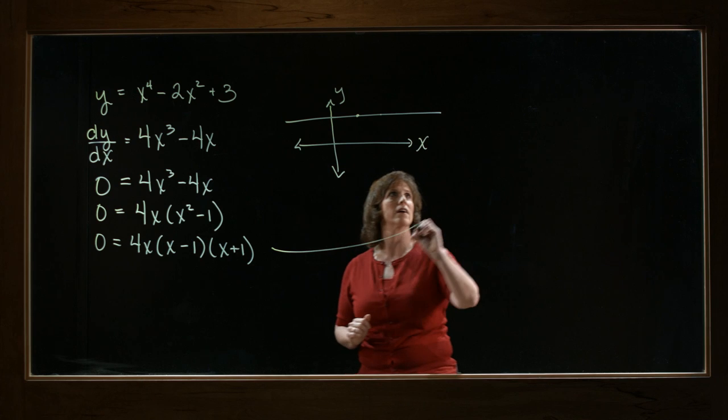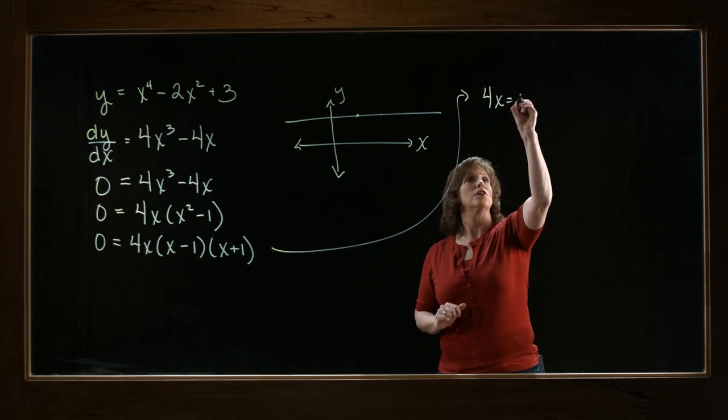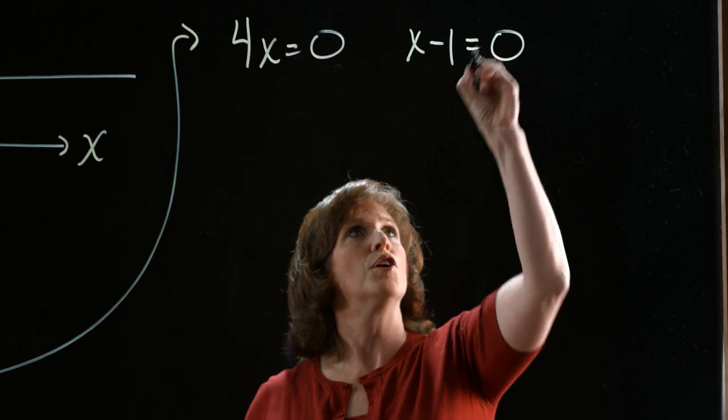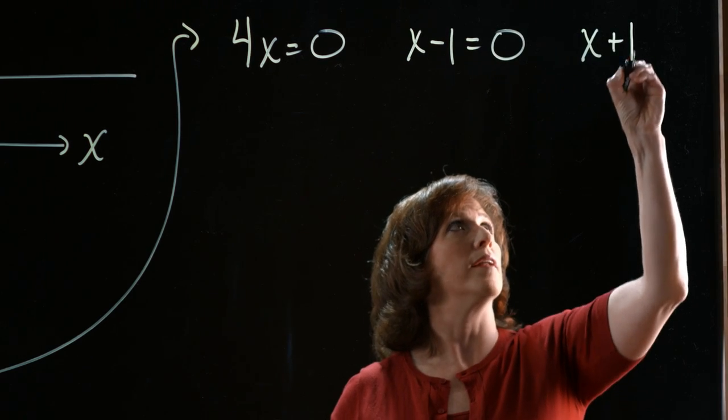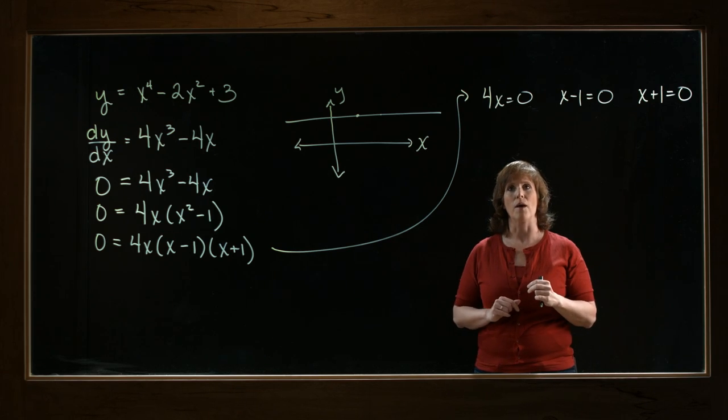So let's bring this over here. So 4x could be equal to 0, x minus 1 could be equal to 0, or x plus 1 could equal 0. Any of these will lead to the result that I want.